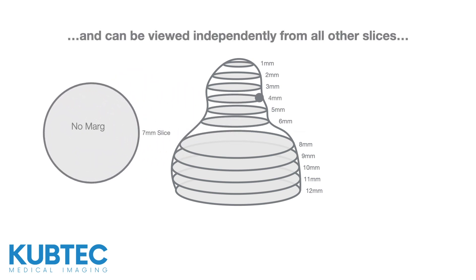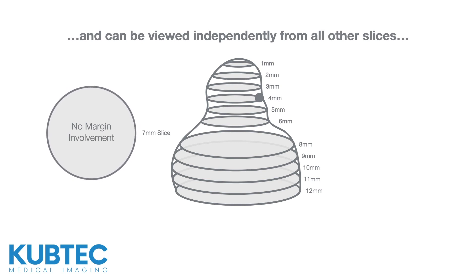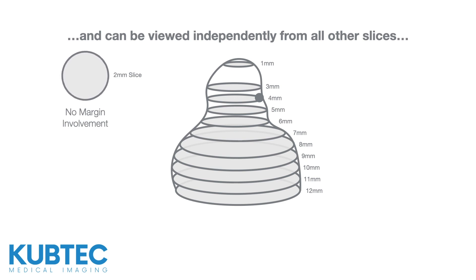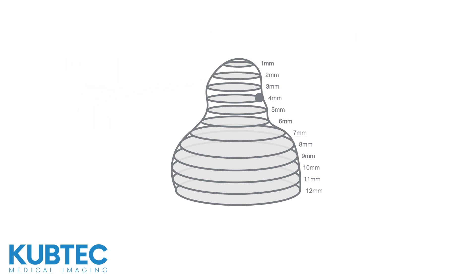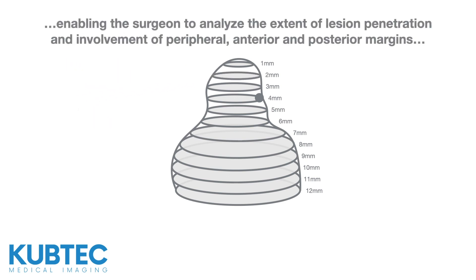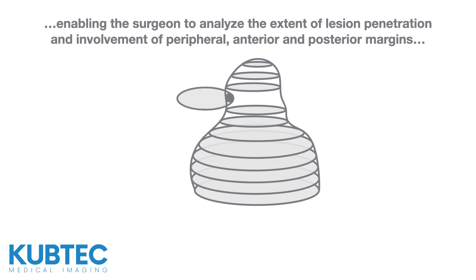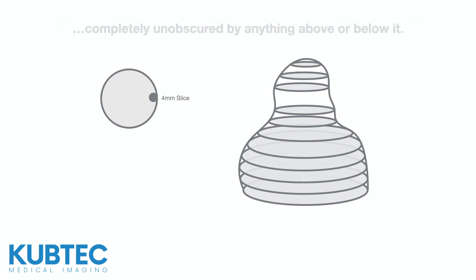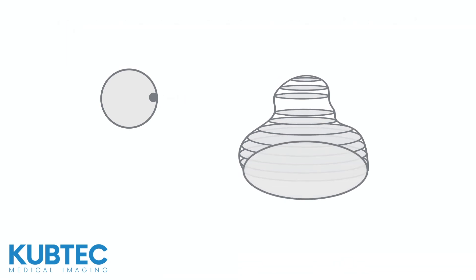Each slice is created and can be viewed independently of the others. In this case, the slices above and below slice 4 have no margin involvement. This enables the surgeon to analyze the extent of lesion penetration and involvement of the peripheral, anterior, and posterior margins, completely unobscured by slices above or below.